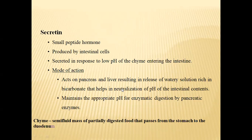As the food coming from the stomach has a lower pH value, to increase the pH, the food must react with base materials. In response to this acid food entry, secretin is released in large quantities. The bile juice and pancreatic juice will have watery solution rich in bicarbonate — meaning less enzyme content and more water content. This maintains the appropriate pH for enzymatic digestion by pancreatic enzymes.